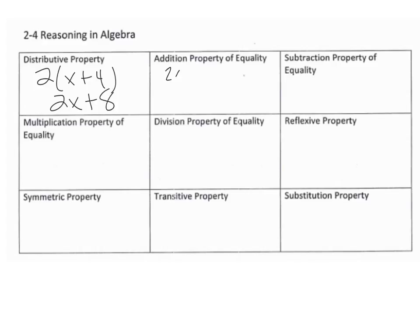The addition property of equality looks like this: whenever you add the same thing to each side, that's the addition property of equality. Just like if you had the same exact problem and you wanted to subtract 4 from each side, that's the subtraction property of equality.